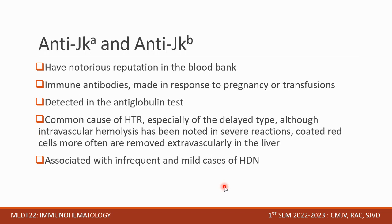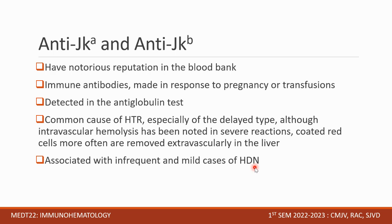Anti-JKA and anti-JKB have a notorious reputation in the blood bank. They are immune antibodies made in response to pregnancy or transfusion, not naturally occurring. They are detected in the antiglobulin phase and are a common cause of hemolytic transfusion reactions, especially of the delayed type. Although intravascular hemolysis has been noted in severe reactions, coated red cells are more often removed extravascularly in the liver. They are associated with infrequent and mild cases of HDFN.